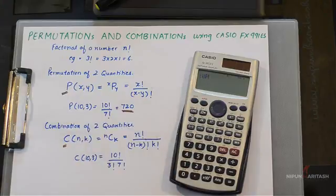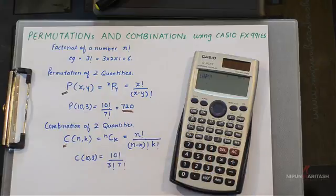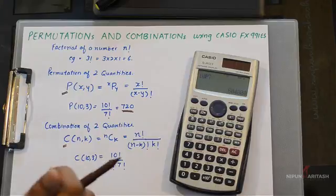and then you write down 7. So this is 10 permutation 7. And this gives me directly... Oh, I am sorry.